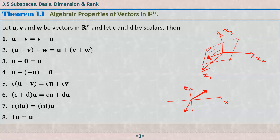Before starting this chapter I want to remind you of Theorem 1.1: the algebraic properties of vectors in Rn. When we talk about a vector space — say Rn, an n-dimensional space — we can take one vector u and another vector v among infinitely many vectors. We call this collection a space.